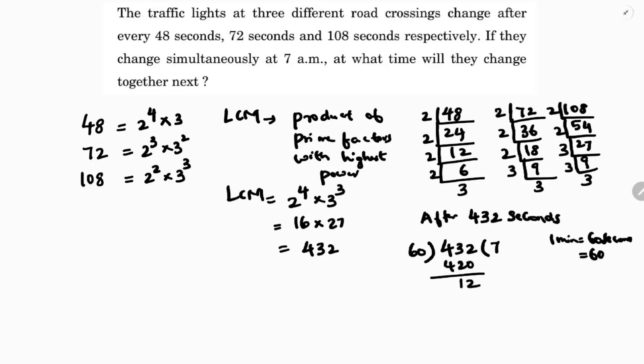So 432 is nothing but 7 minutes plus 12 seconds. So next they'll change at 7 a.m., 7 minutes and 12 seconds. At 7:07:12.